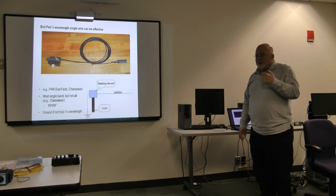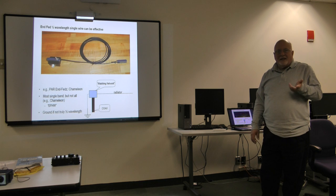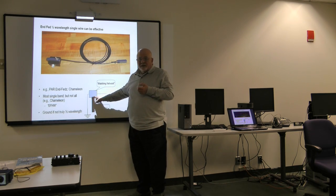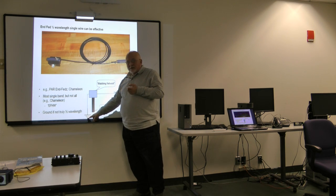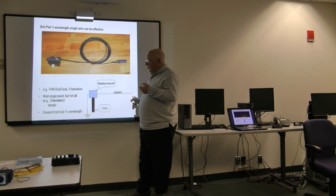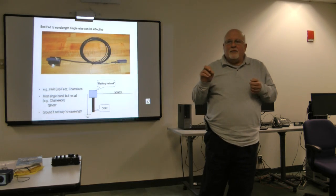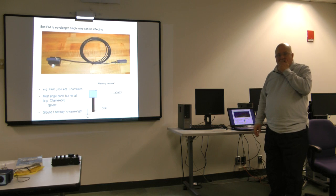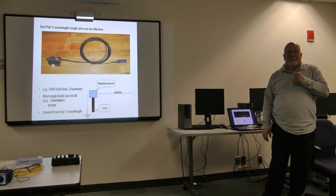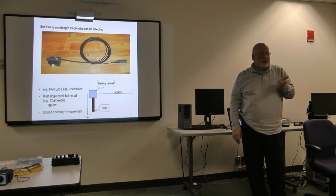End fed half-length single wires. You always see these advertisers, EFHW, end fed half-waves. The best known probably is the PAR end feds. There's also Chameleon makes one. Basically, what you've got is a matching network. It's really just a balun. The radiator, and you're going to have a ground. So here's your coax coming into the matching network. You have got a ground on one side and a half-wave or approximately half-wave. Most of these are single band. And as we're going to see in a minute, if it's truly a half-wave, you don't actually have to ground it. I've got one for 80 and one for 40. If you can stretch them out in a tall tree, pretty decent results. One of the things with this, of course, it's just wire. If you can shoot the wire up, you get a vertical. There's no reason why you can't use it as a vertical.